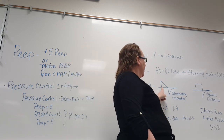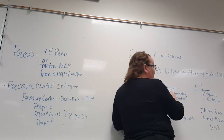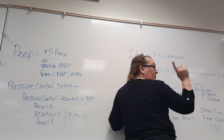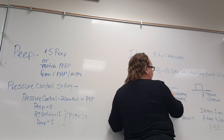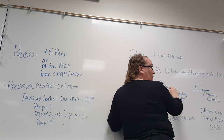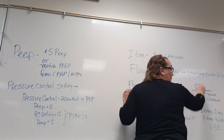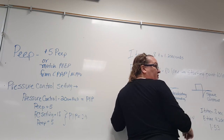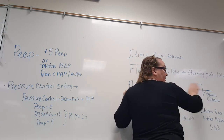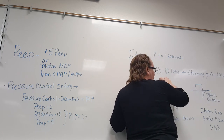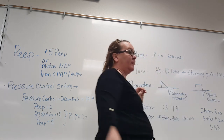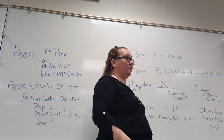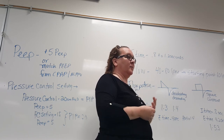The decelerating pattern starts with a burst of flow and then tapers off. The square pattern keeps it the same throughout — it's just constant. This one gives you an initial burst and then slowly tapers off, which is why it's more comfortable — it kind of satisfies the patient's need to get the breath.